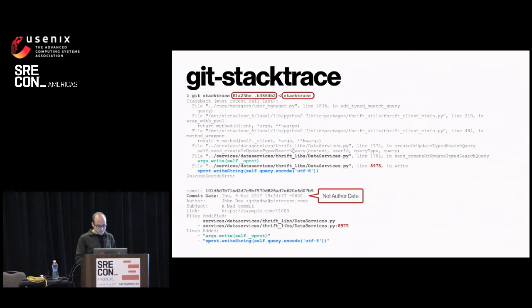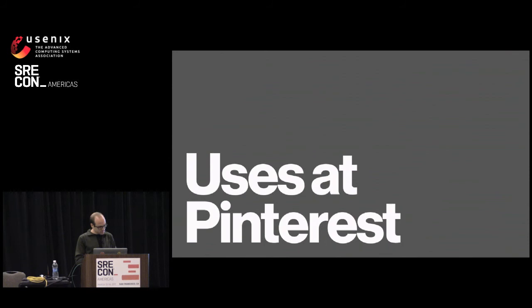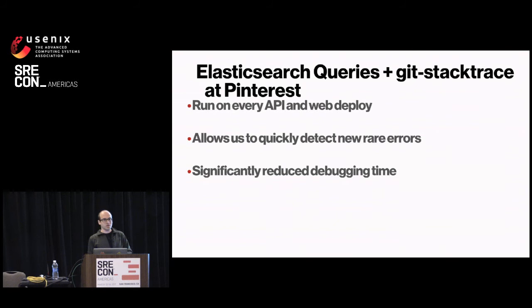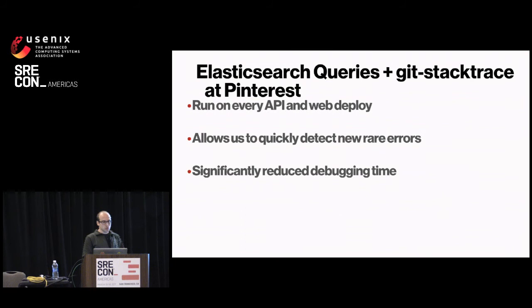Putting this all together at Pinterest: we use this combination of Elasticsearch queries and git-stack-trace every day, running it on every API and web deploy. One thing we didn't realize right away is it allows us to quickly detect new rare errors. Even if your SLA is still very high, an error might happen once every minute across a large fleet — rare enough that you can't spot it in the log system, but it's causing the same error repeatedly for certain queries or users. By comparing old versus new stack traces, we're able to spot really rare issues we'd never noticed before.